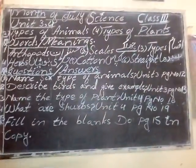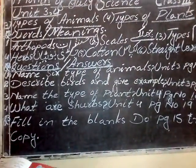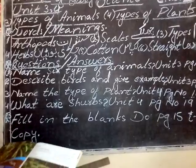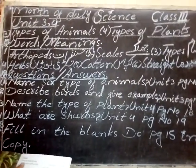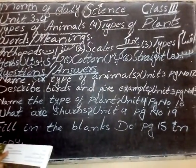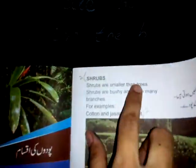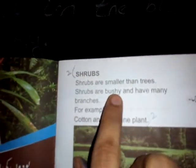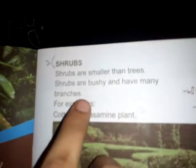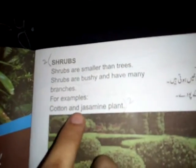Let's check: what are shrubs? Page number 19. Shrubs are smaller than trees. Shrubs are bushy and have many branches. For example, cotton and jasmine plants.